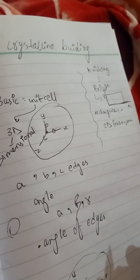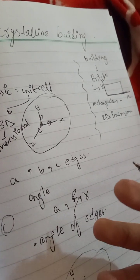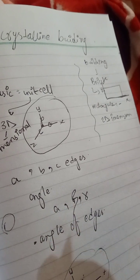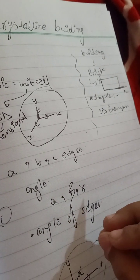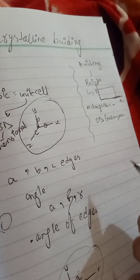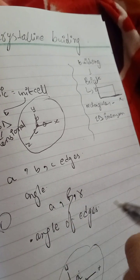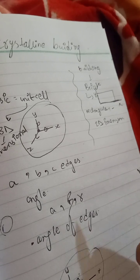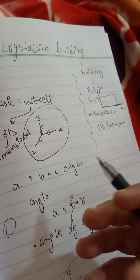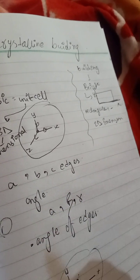The collection of edge and angle information is called the parameter, or the unit cell parameters. Through these parameters we will identify the structure. We are having seven types of crystalline solids.